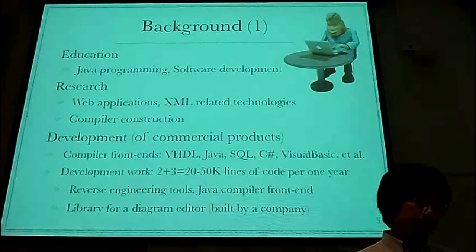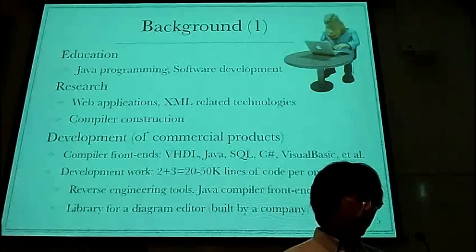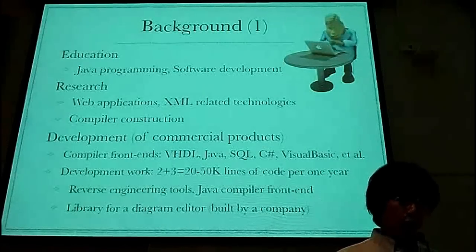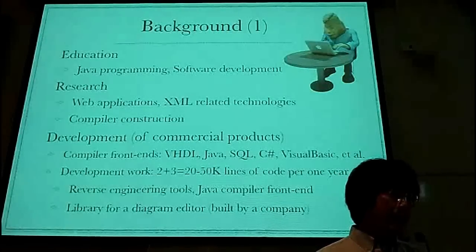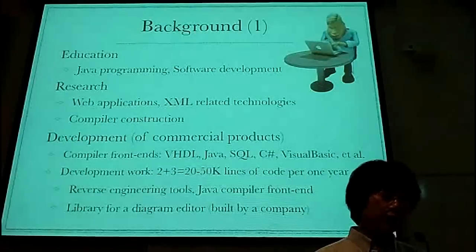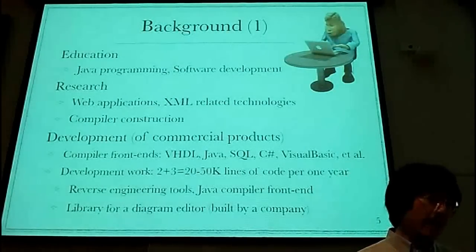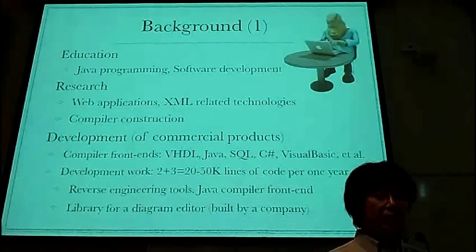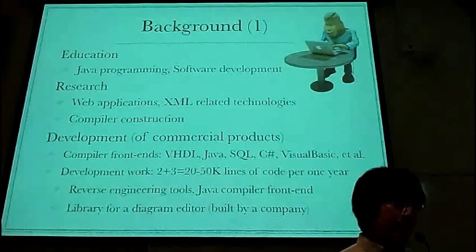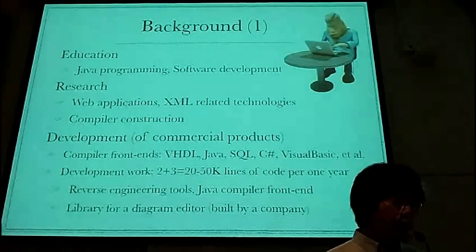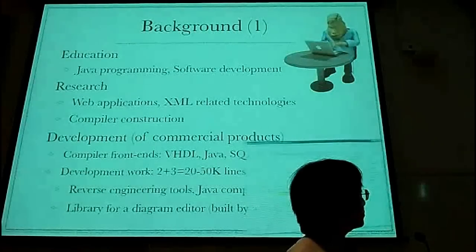Here is my background. I work at the university to give lectures about Java programming and software development. I do some research projects about web applications, XML, and compiler construction. Moreover, I have some joint projects with software companies to develop compiler frontends. The programming languages I have developed compiler frontends for include hardware discrete language, Java, SQL, C-Sharp, and so on. But I don't have any graduate students — I'm a solo player. It means I develop software by myself. I probably write 20k to 50k lines of source code per year.